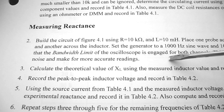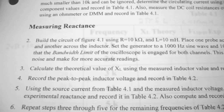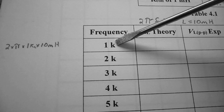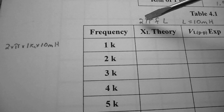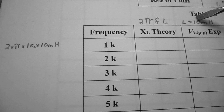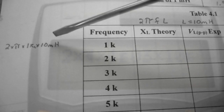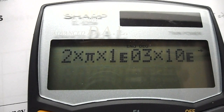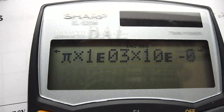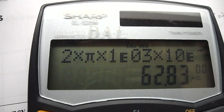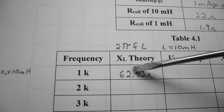Under procedure step number three, we're going to calculate the theoretical value of XL using the measured inductor value and record it in table 4.2. At a frequency of 1 kilohertz, XL equals 2πFL. With L of 10 millihenries and F of 1k, the calculation is 2 times pi times 1×10³ times 10×10⁻³, which equals 62.83 ohms. Write down 62.83 ohms — remember XL is resistance measured in ohms.